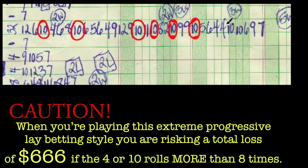Now, when you're playing this extreme progressive lay betting style, you are risking a total loss of $666 if the four or ten rolls more than eight times.